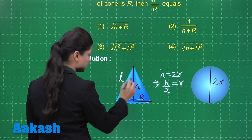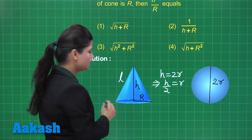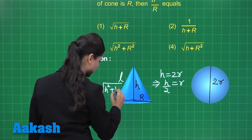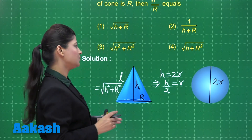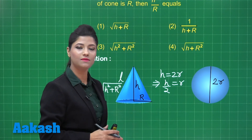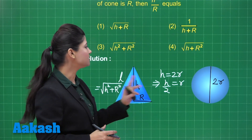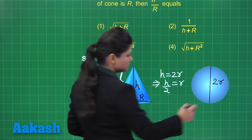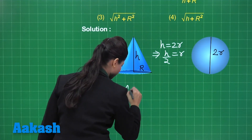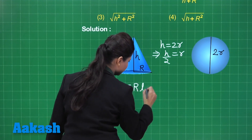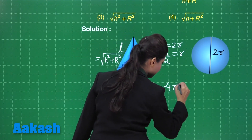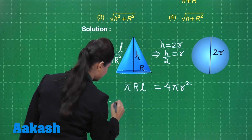The slant height of the cone is l = √(h² + R²). It is given that the curved surface areas are equal, so curved surface area of cone = πRl equals curved surface area of sphere = 4πr². We now substitute l = √(R² + h²) and r = h/2.